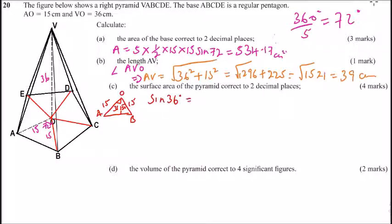We can get the length of AB. The sine of 36 degrees is equal to half AB divided by the hypotenuse, which is 15. When you do that, you will get AB equals 30 sine of 36. Using your calculator, that is 17.63 centimeters.